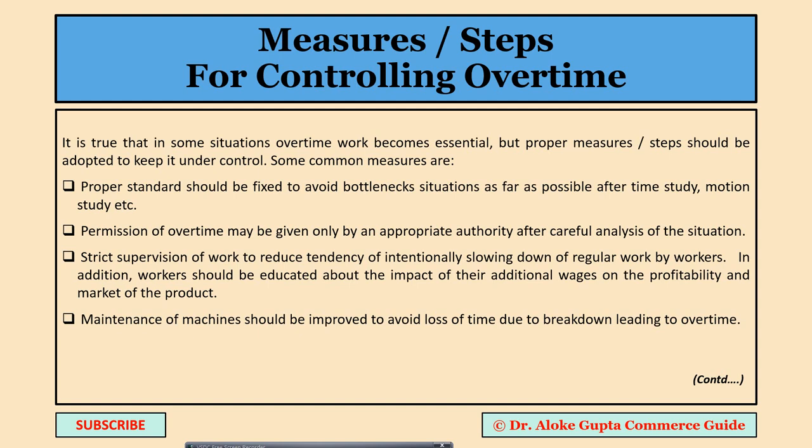The second measure is that permission for overtime may be given only by an appropriate authority after careful analysis of the situation. Workers themselves should not be in a position to decide to work overtime, because they know the overtime wage rate is higher. Allowing workers to decide on their own would encourage them to do so for extra money. Permission from appropriate authority provides a check on this tendency.